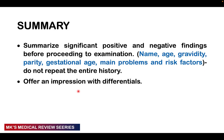After taking the history, summarize the positive and negative findings before proceeding to physical examination. Include the name, age, gravidity, parity, gestational age, main problems, and risk factors. Remember: a good history is like a miniskirt — short yet covering the essential parts. After the summary, offer an impression with differentials and possible investigations, then examine the patient to come up with a working diagnosis, final investigations, and management plan.